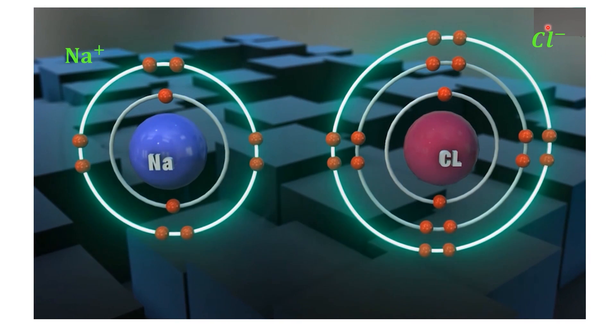On the other hand, chlorine needs one more electron to complete its octet. When it gains that electron, it achieves the stable configuration of argon and becomes a negatively charged ion.